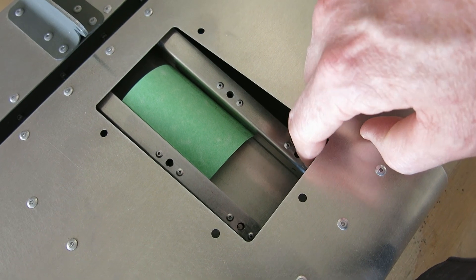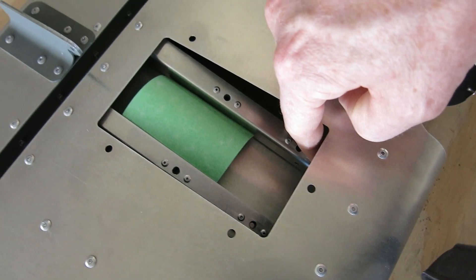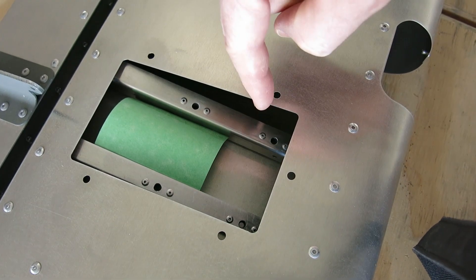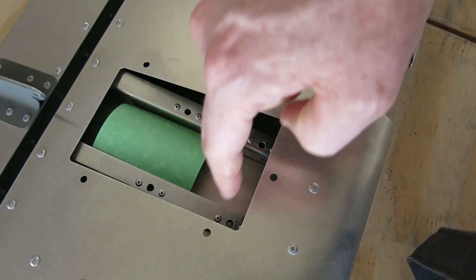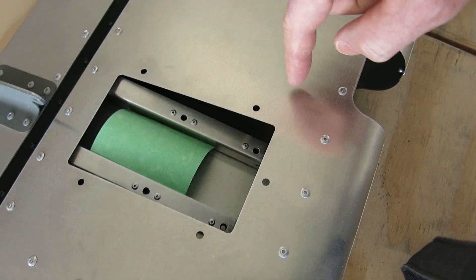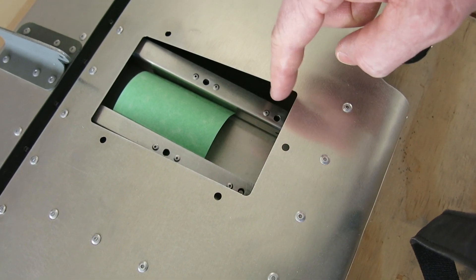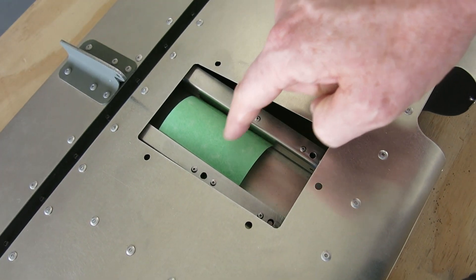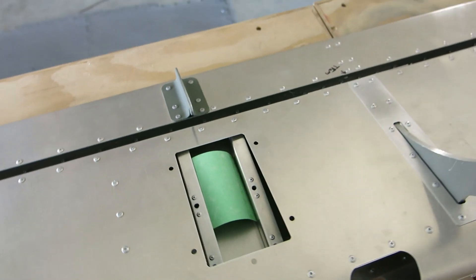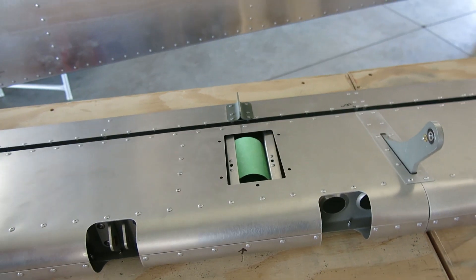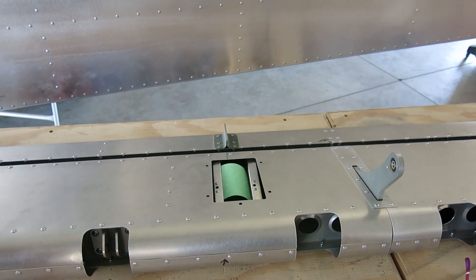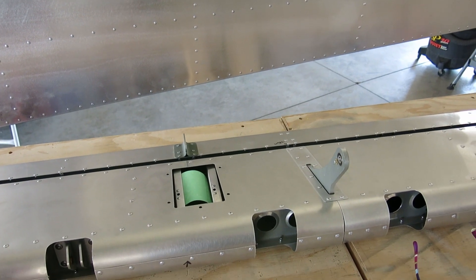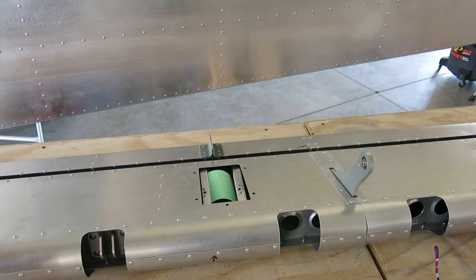However, once you get the skin on this elevator, you're not going to be able to get a rivet puller down in there to replace that rivet. So we're going to leave the forward nut plates as a number eight, but we're going to replace these with a number six. That's what's on the slate for right now.